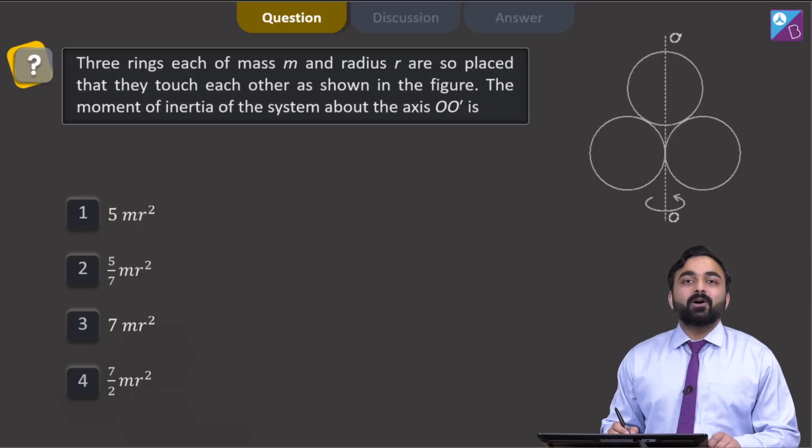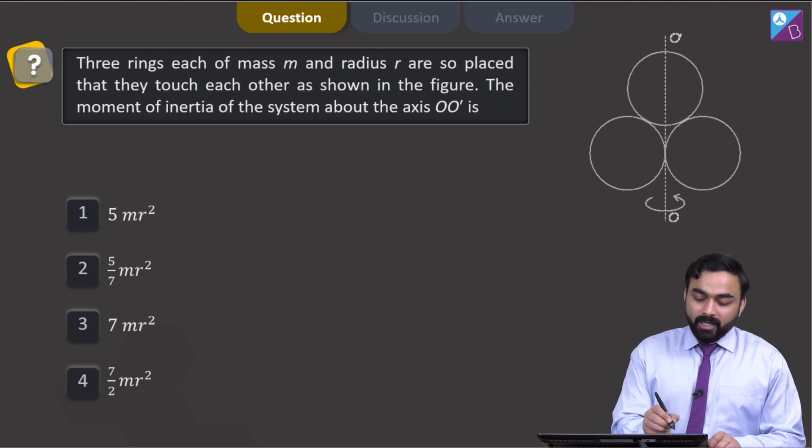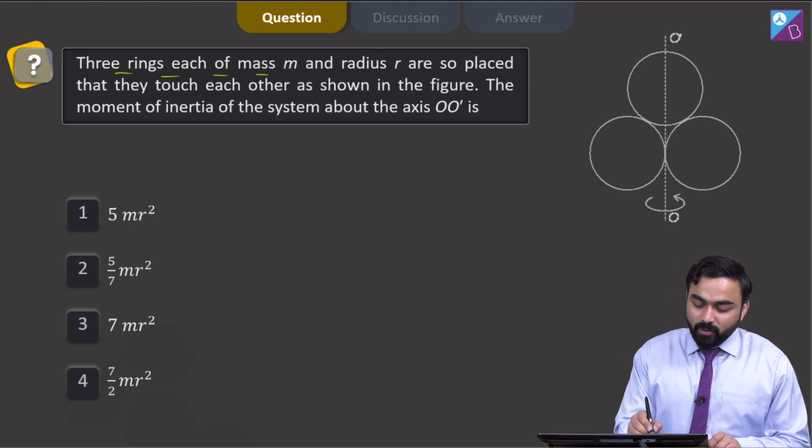Hello dear students, let us check out this question. In this question, three rings each of mass m and radius r are so placed that they touch each other as shown in the figure.